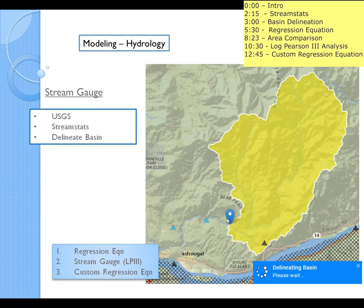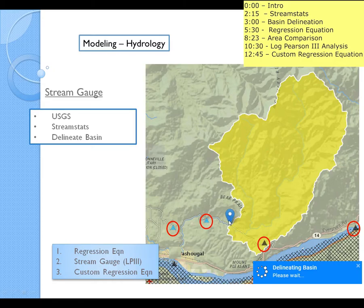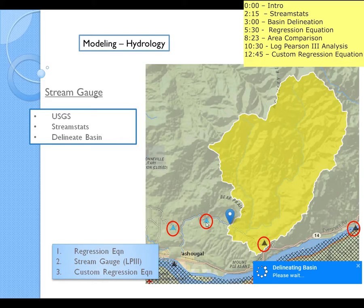And StreamStats also has some other really cool tools which I'm going to show you today. In this first diagram you can see these are all the rain gauges that you could get information from. But it's really good to think about where your site is in relation to a stream gauge, because if you're really close to a stream gauge, you may be able to just use the data from that stream gauge and just slightly alter it to be more site-specific.